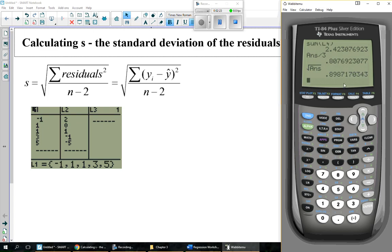This number, 0.899, is the standard deviation of the residuals, or it's the amount that my line is typically off for each of the data points. That's how you do it.